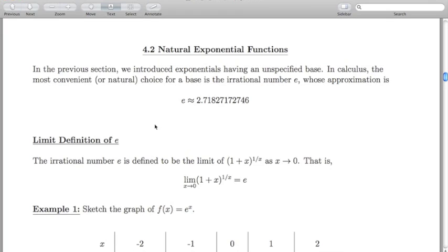Section 4.1 was just an introduction on exponential functions and what we mean by an exponential with a constant base raised to a variable power. In section 4.2 we're going to delve a little bit deeper into some of these notions on exponentials. Section 4.2 is the natural exponential function. In the previous section, we introduced exponentials having an unspecified base; that base a could have been any positive number not equal to one.